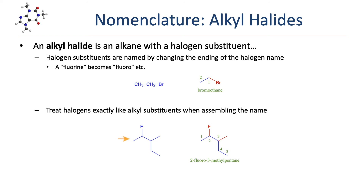Always go back to the beginning of the process for naming compounds. Find that parent chain. In this case, the longest carbon chain is a 5-carbon chain. We number that chain starting from the end that is closer to a substituent — it doesn't matter what kind. We can get to that fluorine substituent quickly by starting on the top left. Numbering sequentially, the fluorine is on 2 and we have a methyl group on 3. We list those two substituents alphabetically with their locants before the parent chain name, giving us 2-fluoro-3-methylpentane.